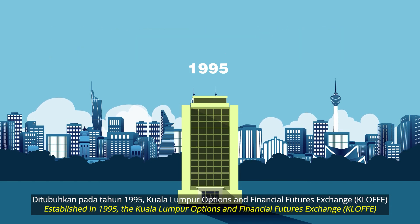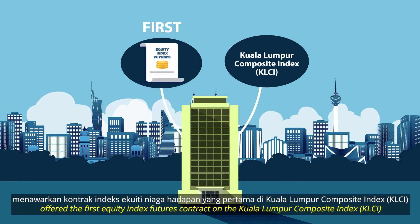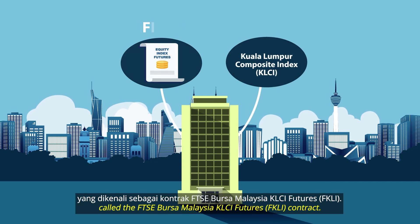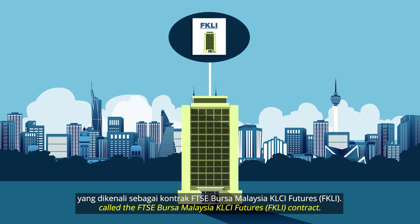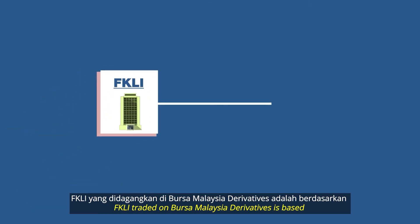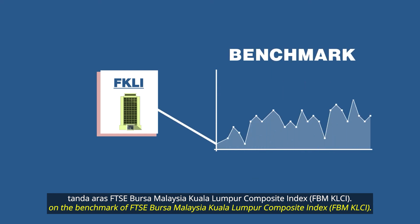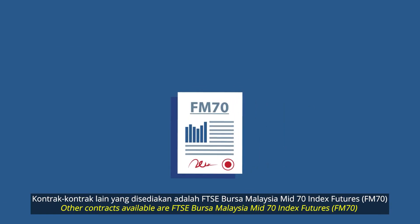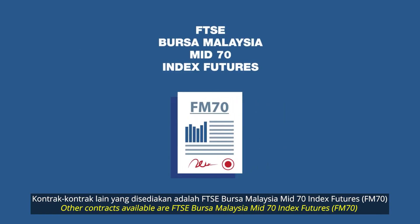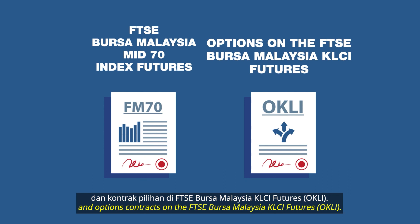Established in 1995, the Kuala Lumpur Options and Financial Futures Exchange (KLOFFE) offered the first equity index futures contract on the Kuala Lumpur Composite Index (KLCI), called the FTSE Bursa Malaysia KLCI Futures (FKLI) contract. FKLI, traded on Bursa Malaysia Derivatives, is based on the benchmark of the FTSE Bursa Malaysia Kuala Lumpur Composite Index (FBM KLCI). Other contracts available are the FTSE Bursa Malaysia Mid-70 Index Futures (FM70) and options contracts on the FTSE Bursa Malaysia KLCI Futures (OKLI).